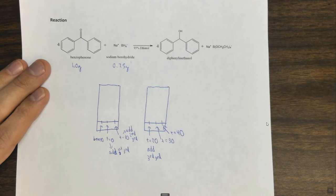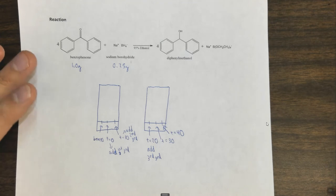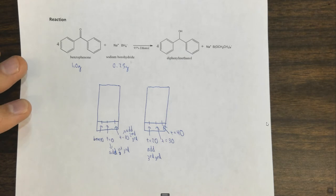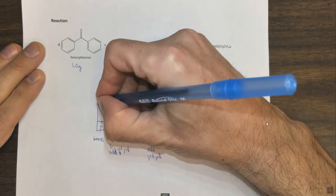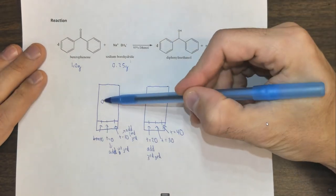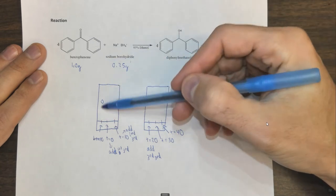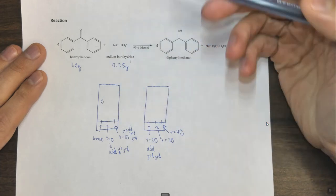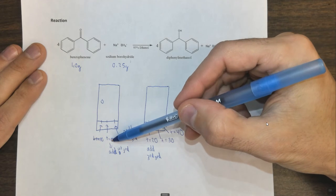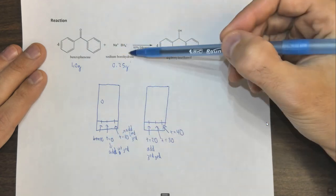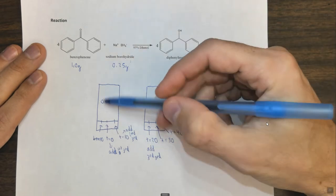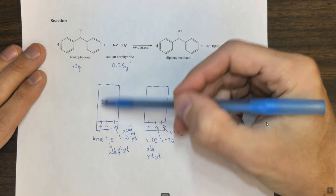Now we need to talk about what we're going to see. I'm totally making up the RF values — the relative distance between the solvent front and the spot — they'll be relatively correct but not absolutely correct. Let's say benzophenone travels to around RF 0.55 or 0.6. At T equals zero, this should be just benzophenone since we have not yet added any sodium borohydride. In theory and probably in practice, we should have a spot at the same point as the benzophenone standard — same RF, because it's just benzophenone.